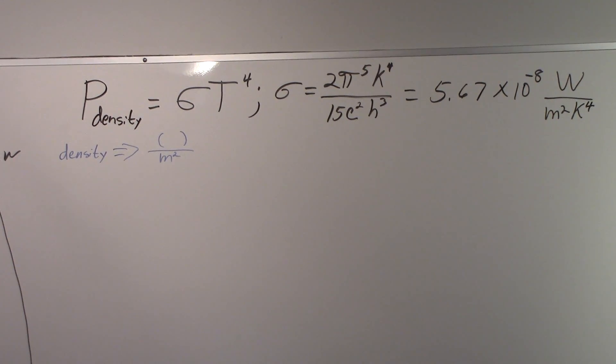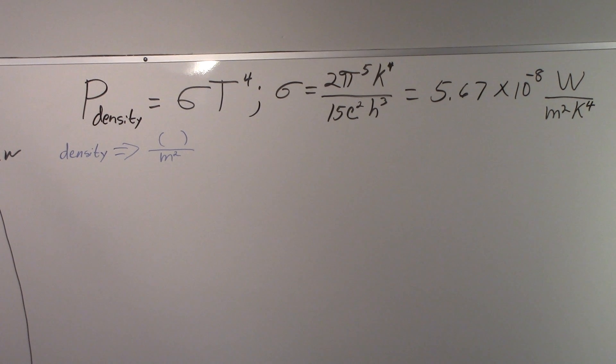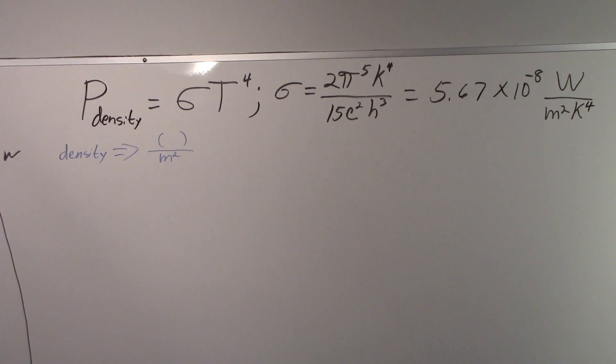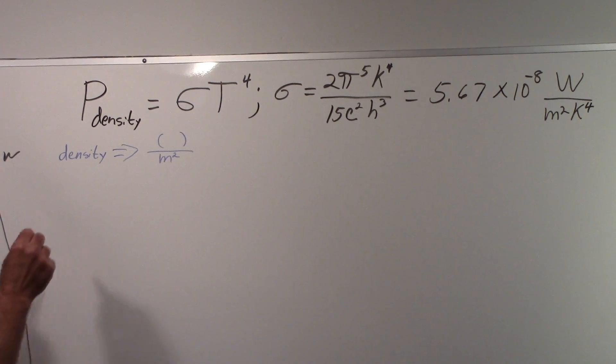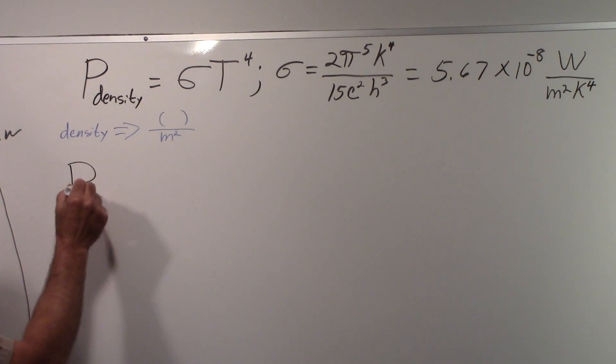And it's called the Stefan-Boltzmann law because Stefan came up with it from some experimental evidence around 1880 or thereabouts. And then Boltzmann, he actually derived it from basic theory. So that's why it's called the Stefan-Boltzmann law. So, in order to do this calculation, we'll start out.